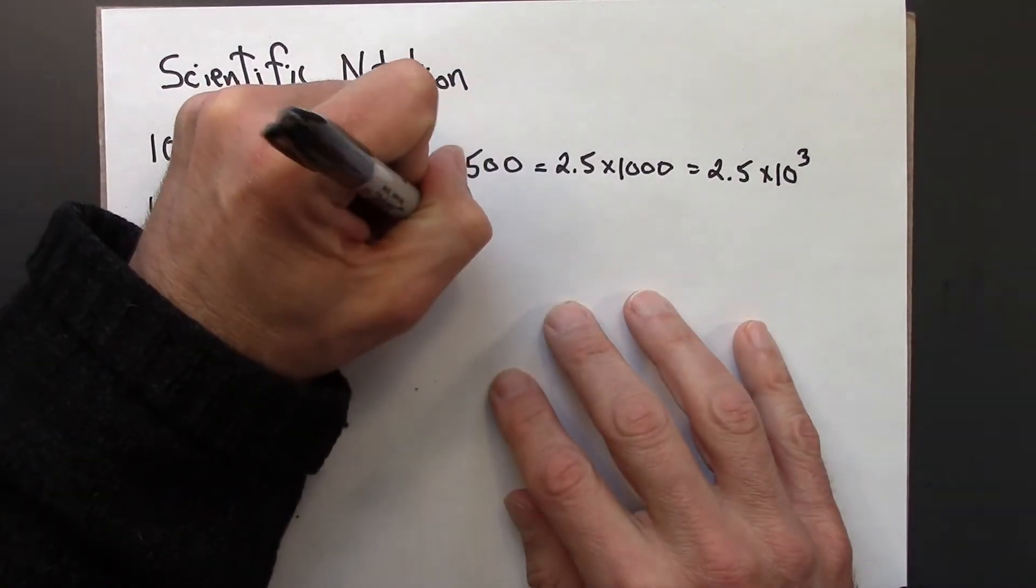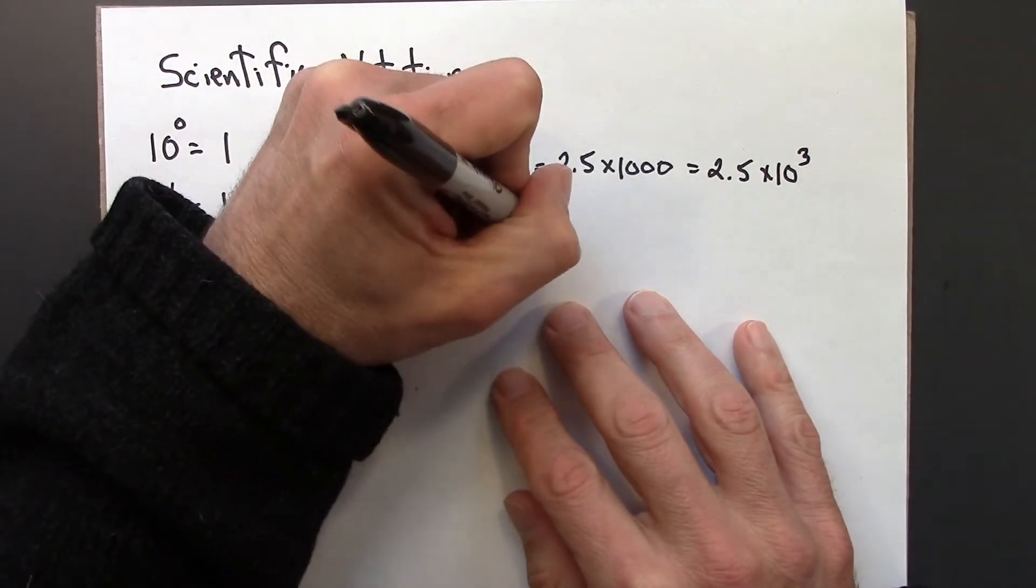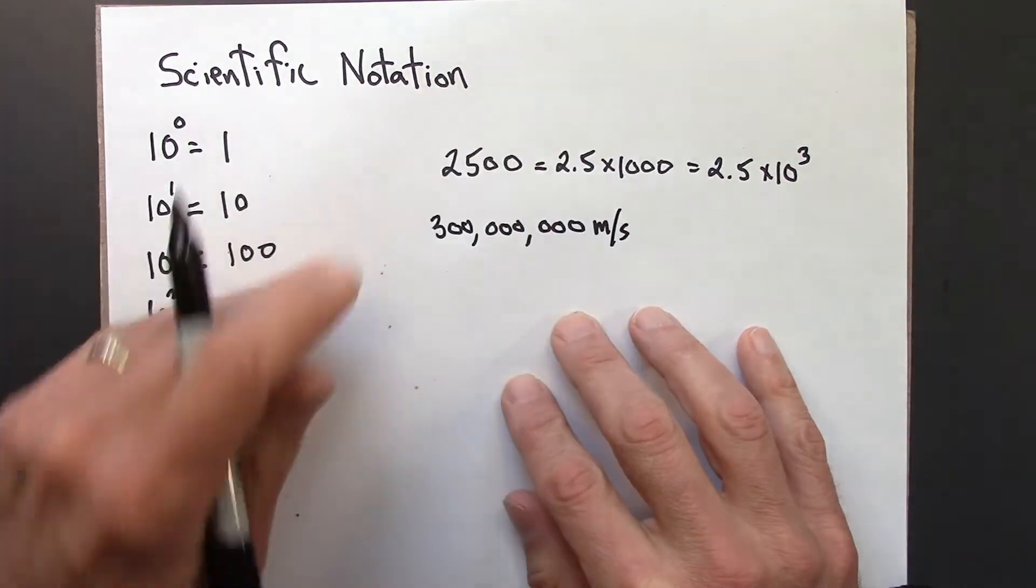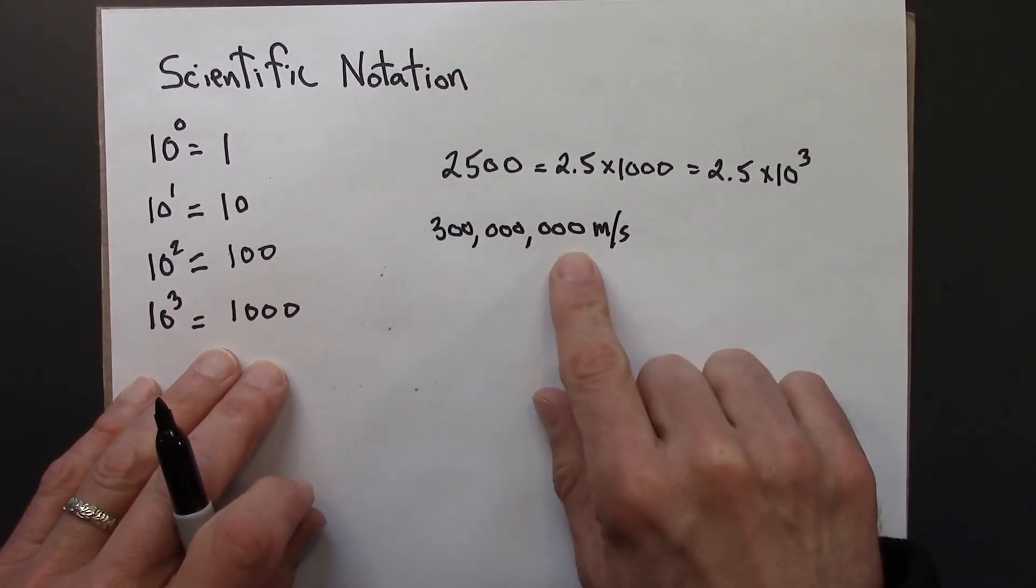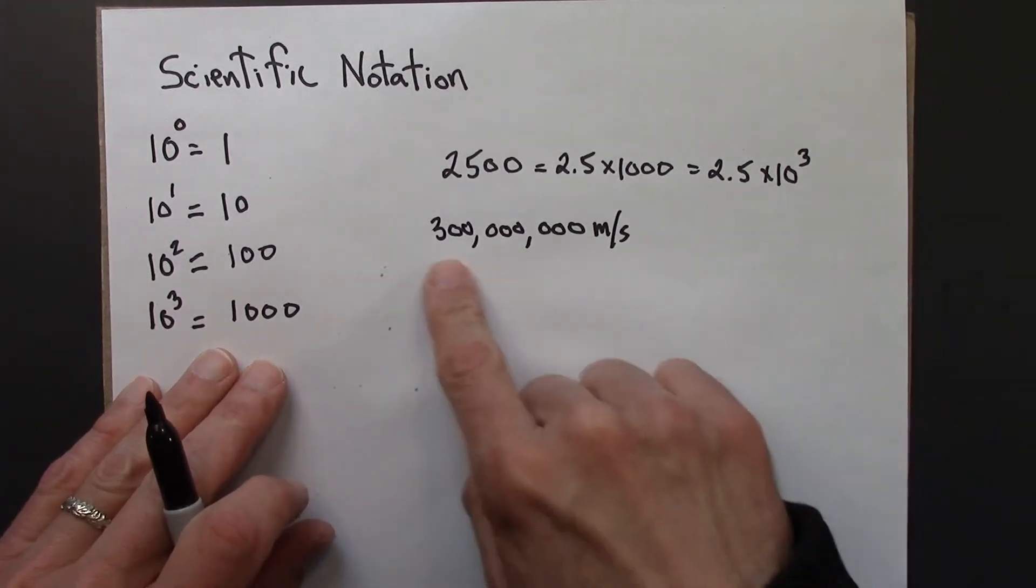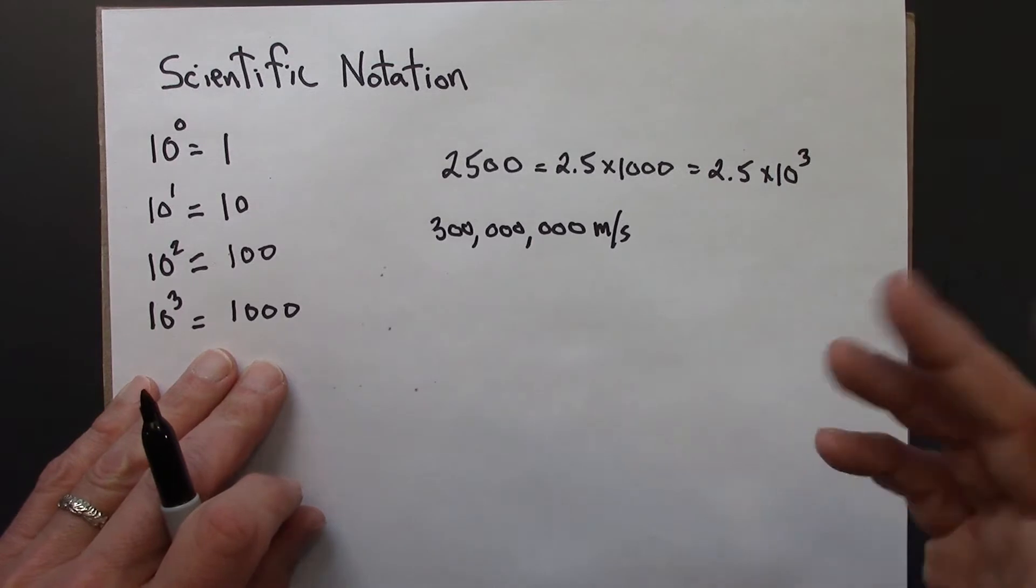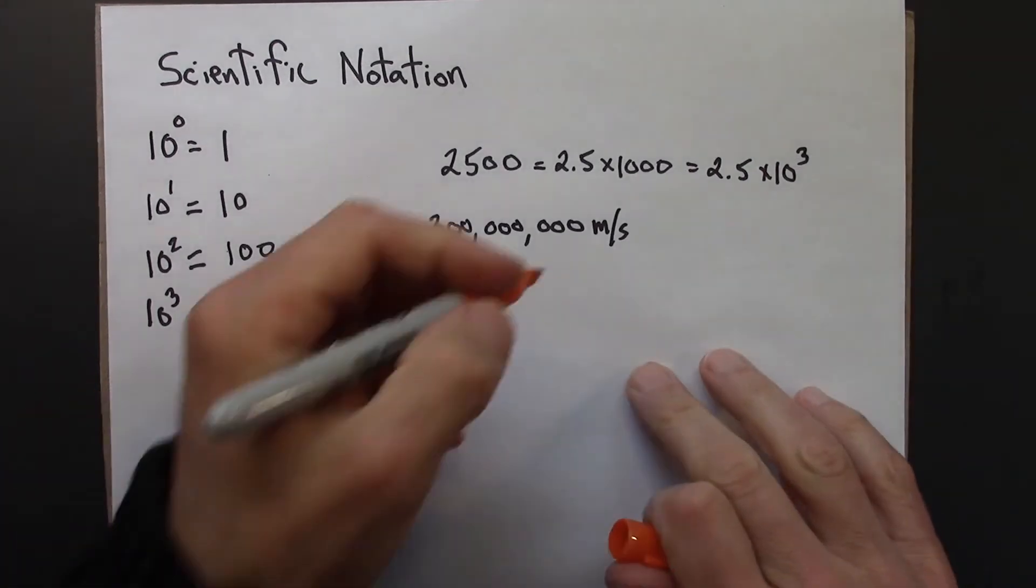To use another example, it turns out that this is the speed of light, approximately. And that's a lot of zeros to write. Easy to make a mistake. Just nothing else. It takes a lot of time and ink resources to write all these zeros. So we can write this more compactly, as follows.